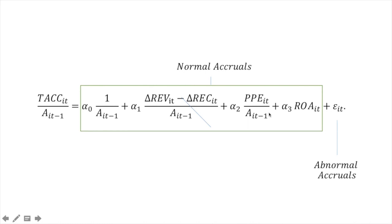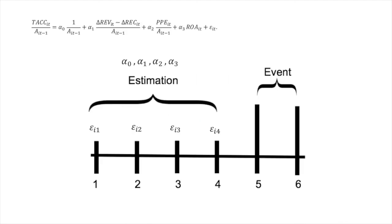The idea is we use the model to estimate the coefficients that are considered normal, and the best way to estimate the coefficients of normal accruals is to use this stable period. We bring the estimated coefficients to the event period, and this will help us predict the residuals of the event periods.